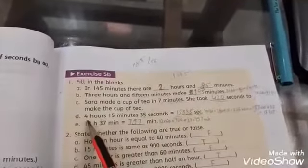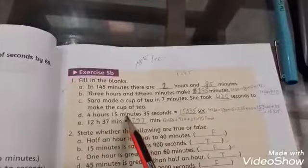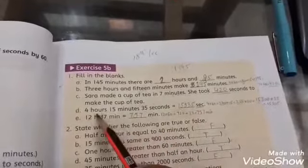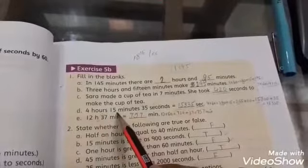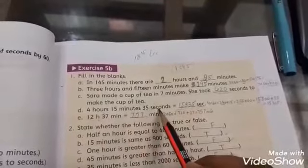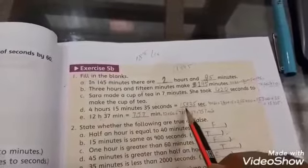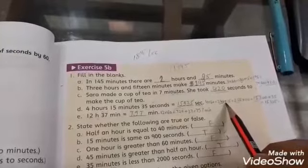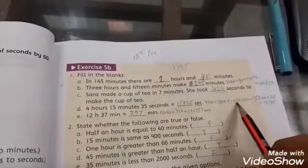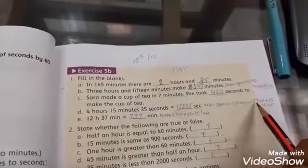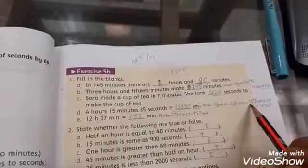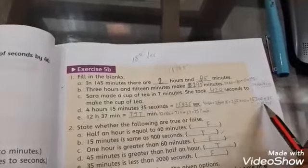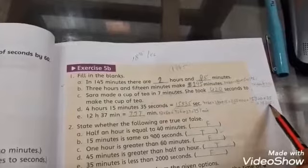4 hours 15 minutes and 35 seconds equals dash seconds. Convert hours to minutes: 4 multiply 60 is 240 minutes, plus 15 equals 255 minutes. Multiply with 60 seconds equals 15300, plus 35 equals 15335 seconds.